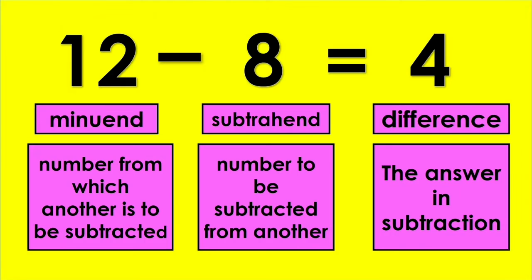Here 12 is called minuend, 8 is called subtrahend, and 4 is called difference. Minuend means the number from which another is to be subtracted. Subtrahend means the number to be subtracted from another, and difference is the answer of the subtraction.